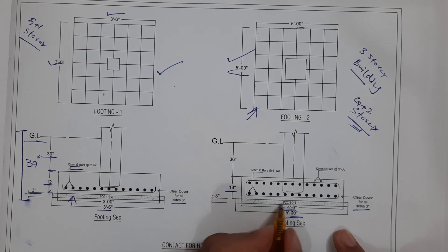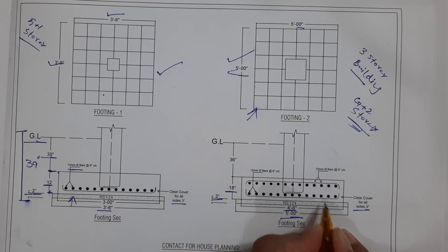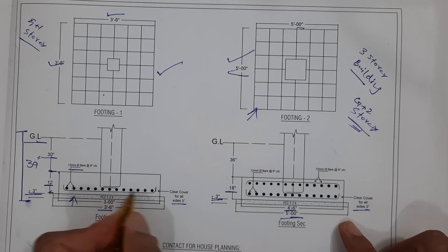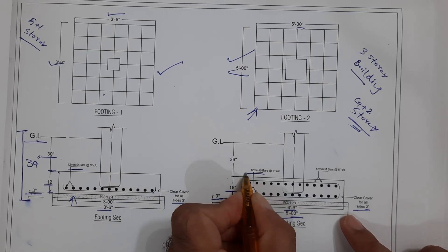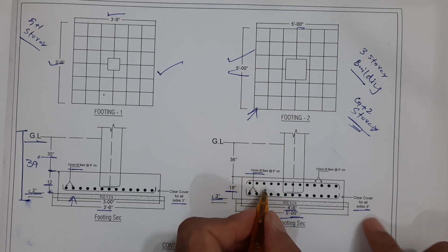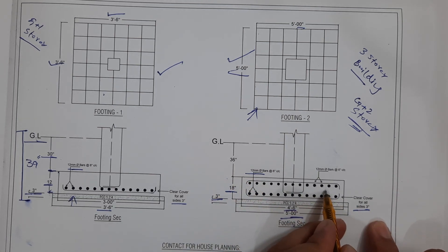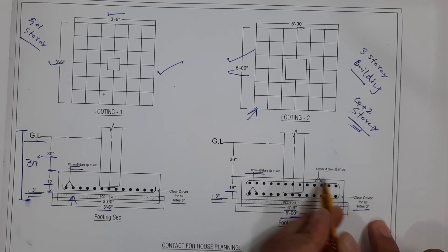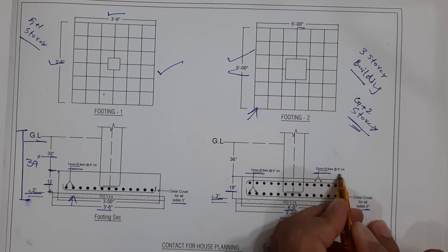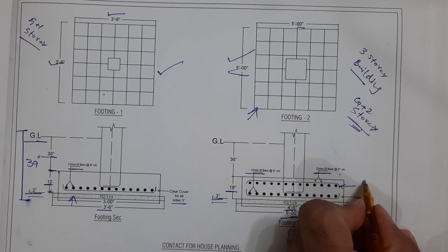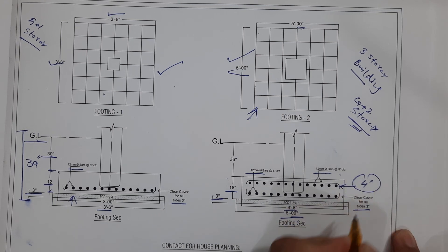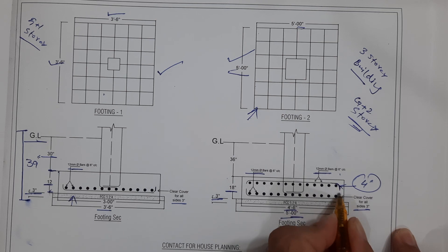The PCC thickness is three inches. In footing two, we have a double mesh reinforcement, compared to a single mesh in footing one. The steel rod diameter is 12 millimeters for both main bars and distribution bars. The upper portion also uses the same diameter and spacing, and the hooks length is about four inches.